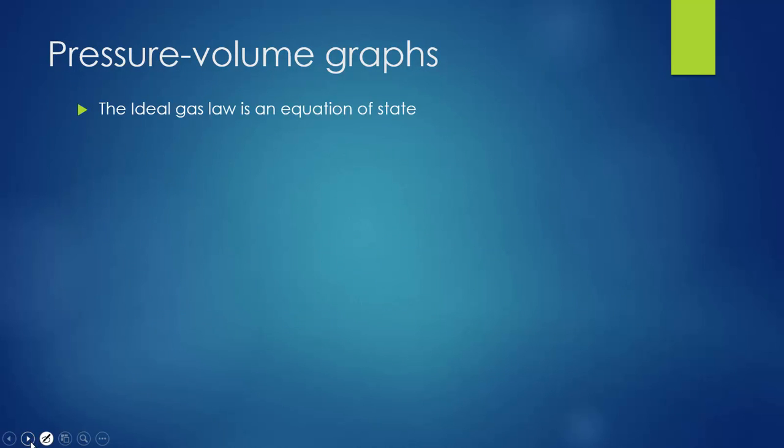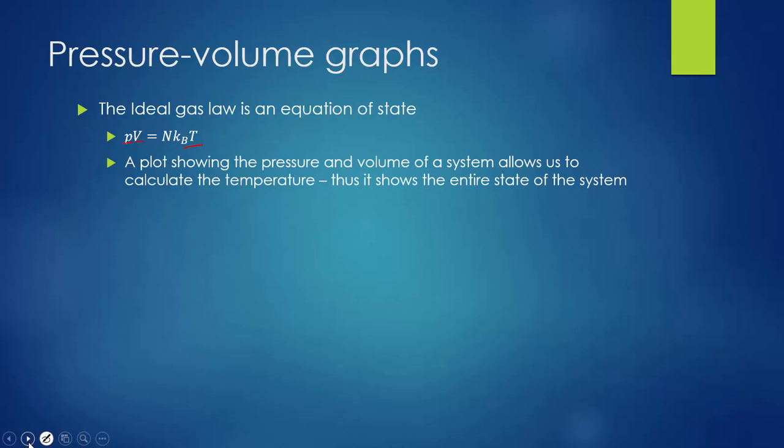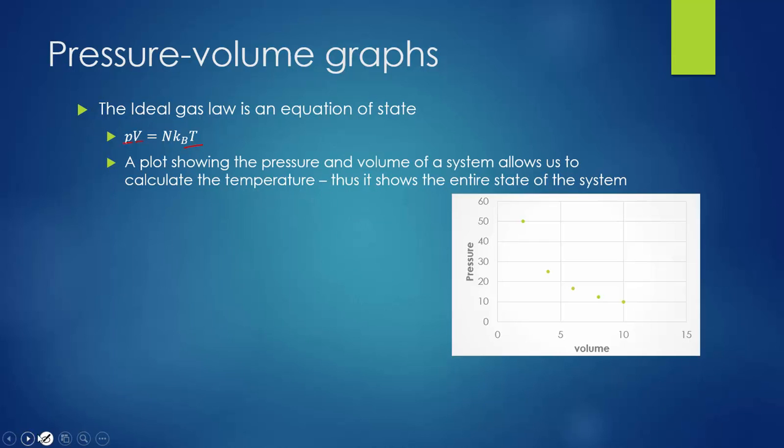These are all related with the ideal gas law, an equation of state that tells us how pressure, volume, and temperature are related at any given point on a pressure versus volume curve. This is a convenient way to map the different states of a system because it shows all three variables - two directly (pressure and volume) and temperature through the ideal gas law relationship.